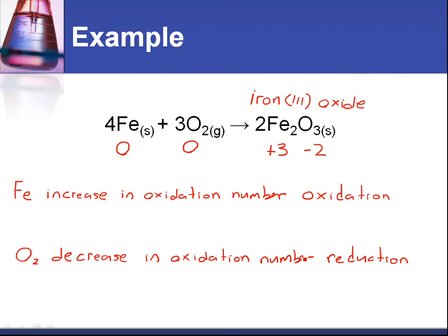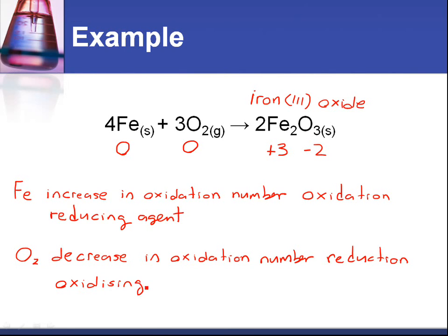Now we can assign the terms oxidizing agent and reducing agent. If you remember the definitions, a reducing agent is oxidized — so in this case, Fe is the reducing agent. And the oxidizing agent is reduced — so in this case, O2 is reduced, meaning O2 is the oxidizing agent. That's how to assign the terms reducing agent and oxidizing agent to reactants in a chemical reaction.